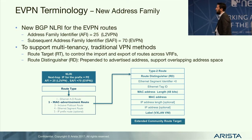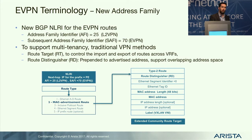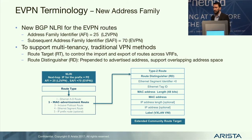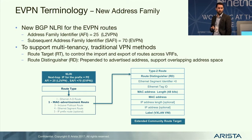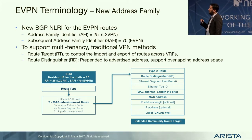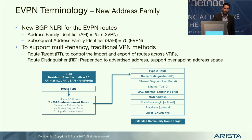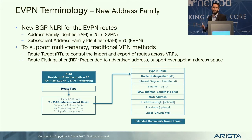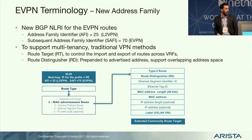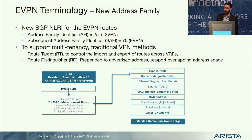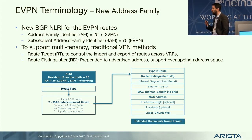The standard defines a new EVPN address family for BGP, using route distinguishers and route targets within each route to provide multi-tenancy and support overlapping IP and MAC addresses. When evaluating EVPN support, you should look not just at whether a vendor supports EVPN but at which route types they support. The standard defines route types 1, 2, 3, and 4; a draft standard defines route type 5 as a prefix route.